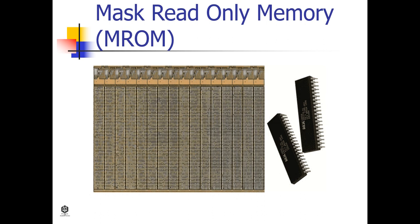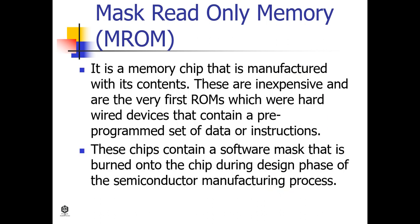Mask ROM is a memory chip that is manufactured with its contents. These are inexpensive and were the very first ROMs — hardwired devices containing a pre-programmed set of data or instructions. These chips contain a software mask that is burned onto the chip during the design phase of the semiconductor manufacturing process. The specification of the ROM is taken by the manufacturer from its customer in tabular form and in a particular format. The manufacturer then makes the corresponding mask for the pads to produce the desired output.